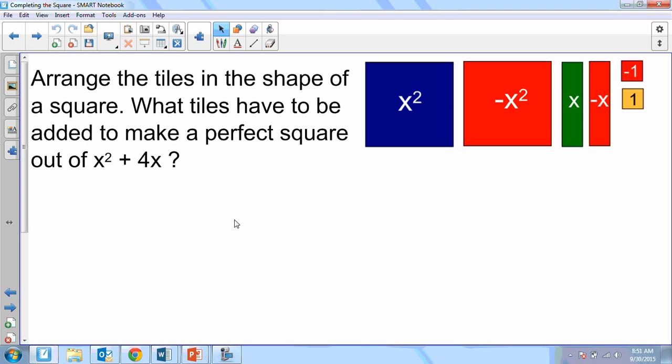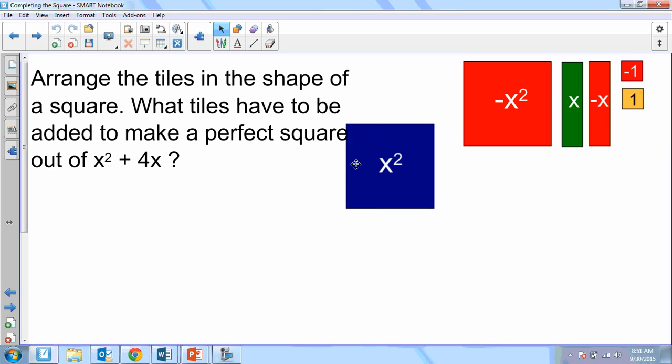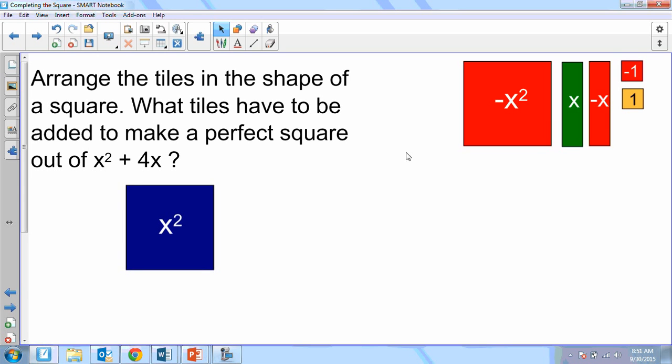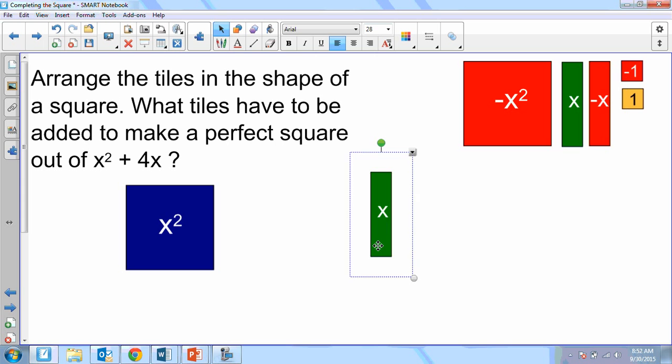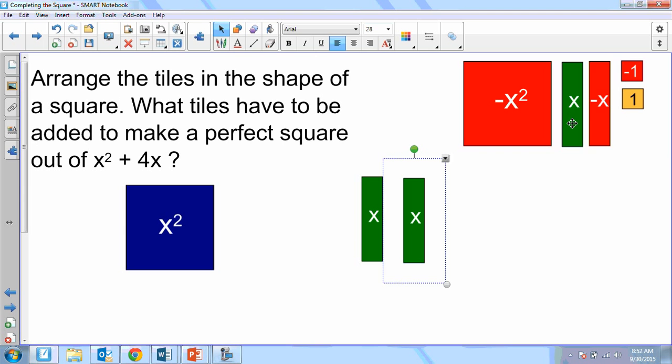So we're really only going to need one of those x squared tiles each time. If you want to organize your stuff and not worry about losing it, put the rest of them back in the bag. But how are we going to arrange this so we can make a perfect square out of x squared and four of these green ones? I'll let you try. See if you can figure it out.